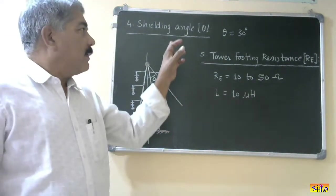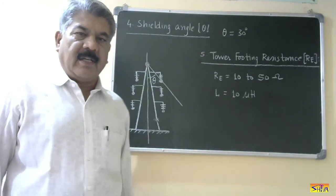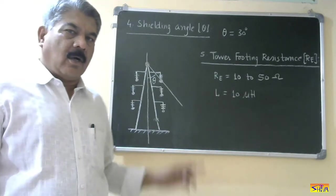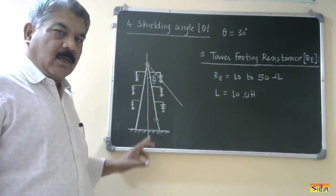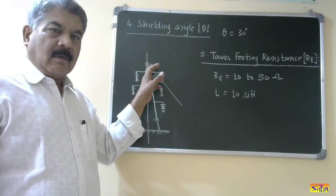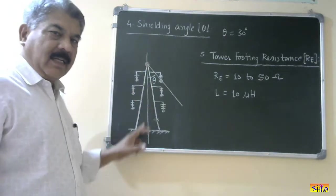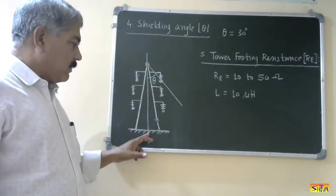Next parameter is shielding angle. Now let us see what is this shielding angle. It is the angle between a vertical line drawn from ground conductor to the earth and the line joining ground conductor with the outermost power conductor.